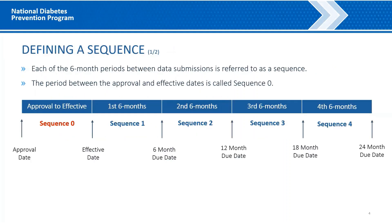Defining the Sequence, Part 1. The periods between data submissions are referred to as sequences. The one exception to this is the period between the approval and effective dates. This period is called Sequence 0. No data submission is made at the start of Sequence 1, which is the month of the effective date.